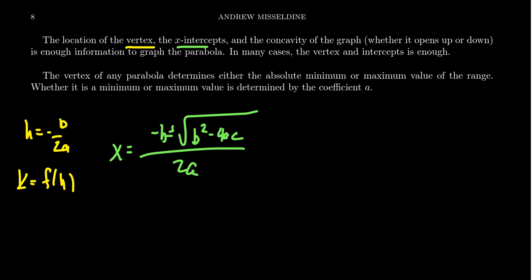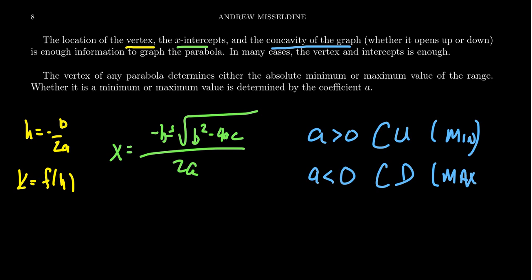And the last thing I want to mention is we can also talk about the concavity of the graph. When your leading coefficient is a positive number, this means the graph will concave upward and the vertex will represent a minimum on the graph. When your leading coefficient is negative, this will tell your graph is concave downward, and thus the vertex will be a maximum on the graph.